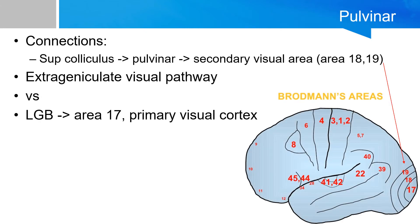The pulvinar receives information from the superior colliculus and transmits that information to the visual cortex. Specifically, the pulvinar transmits to Brodmann areas 18 and 19, which is the secondary visual cortex. This is different from the primary visual cortex, which is Brodmann area 17. Brodmann areas 18 and 19 are just anterior to the primary visual cortex.